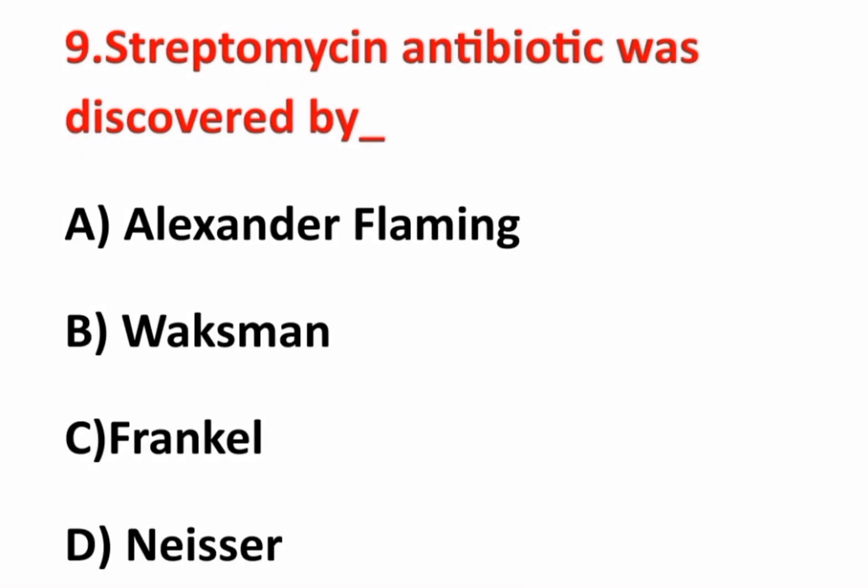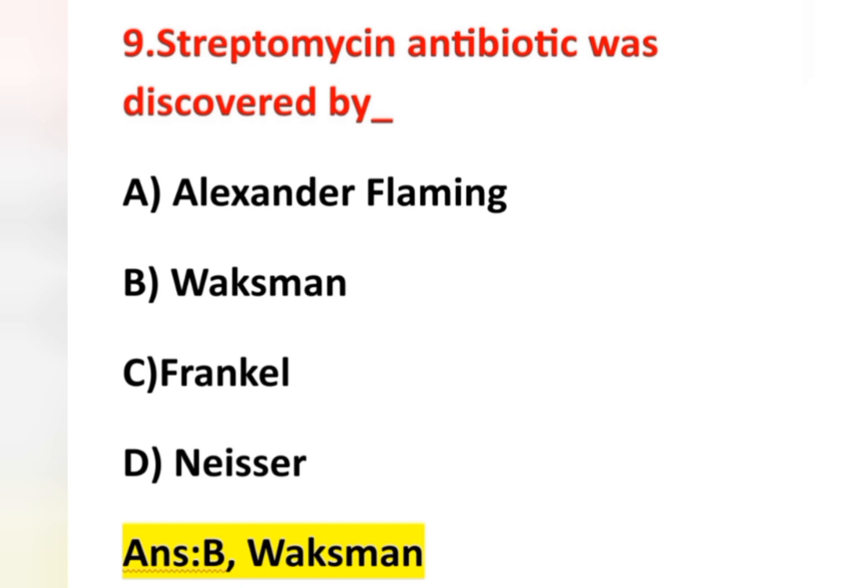Ninth question: streptomycin antibiotic was discovered by — option A Alexander Fleming, option B Waksman, option C Frankl, option D Nasser. The answer is option B, Waksman — S.A. Waksman discovered streptomycin. Alexander Fleming discovered penicillin. Frankl discovered Pneumococcus bacteria, and Nasser discovered Gonococcus.